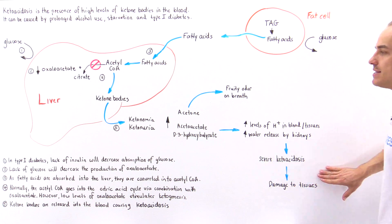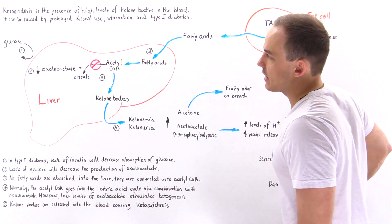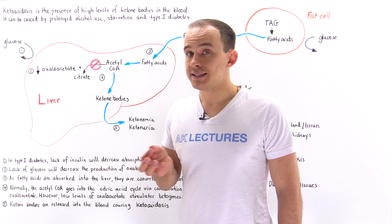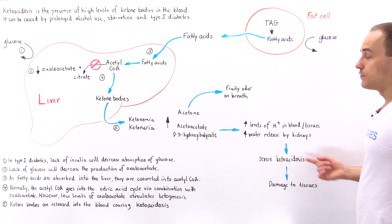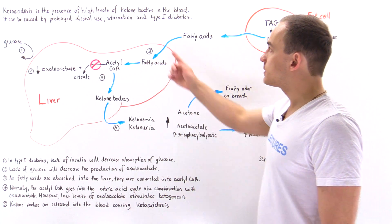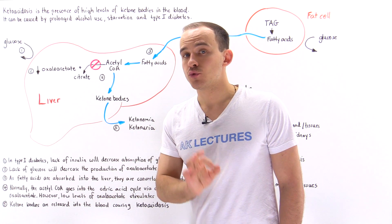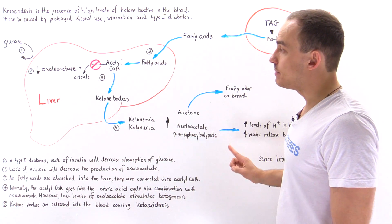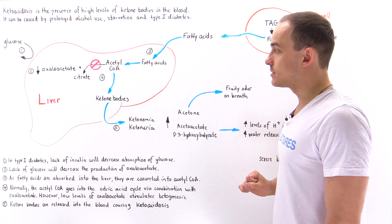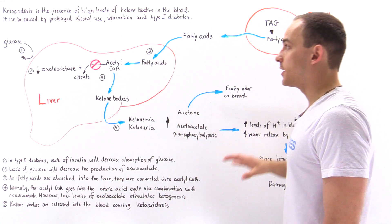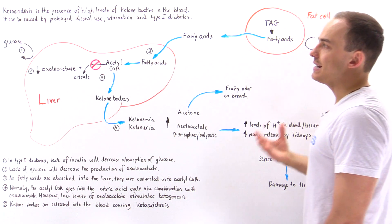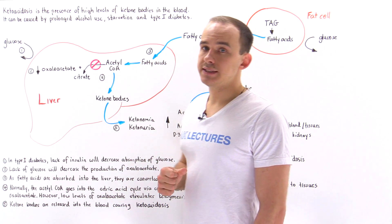This can basically damage tissues and cells of our body. For example, it can damage the central nervous tissue, the central nervous cells. So we see that it's very important for type 1 diabetics to actually regulate their insulin because if they don't regulate their insulin, they're going to get ketoacidosis, which can be very damaging to the tissues. It can even lead to death.